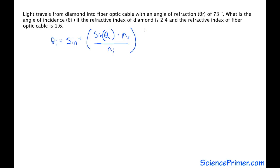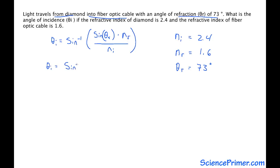We go up into the problem to figure out how to fill out the other side of the equation. The light is traveling from diamond into fiber optic cable, which means the incident material is diamond. So the refractive index of the incident material is 2.4. The refractive index of the refracted medium — the cable — is 1.6 as given in the question. We're also told that the angle of refraction is 73 degrees. So we have sine of 73 degrees times 1.6 divided by 2.4.